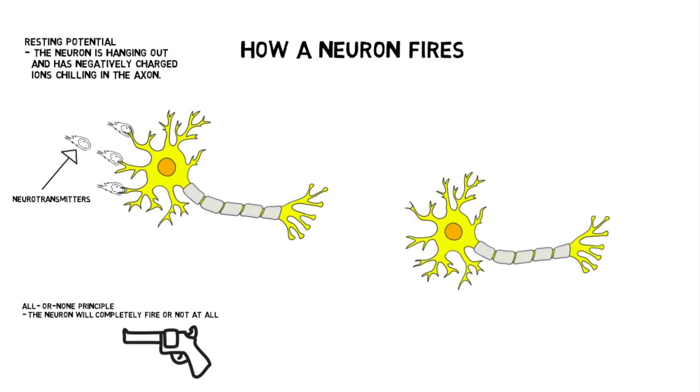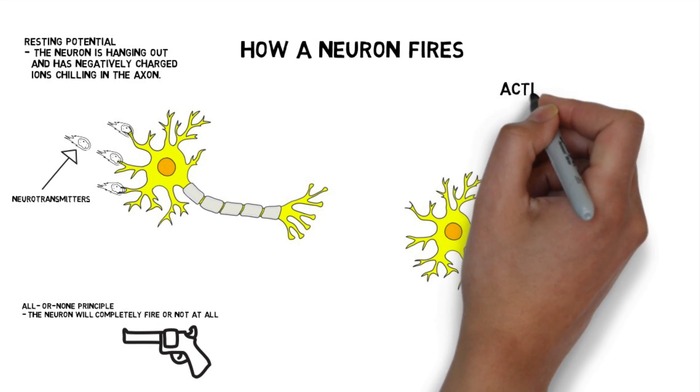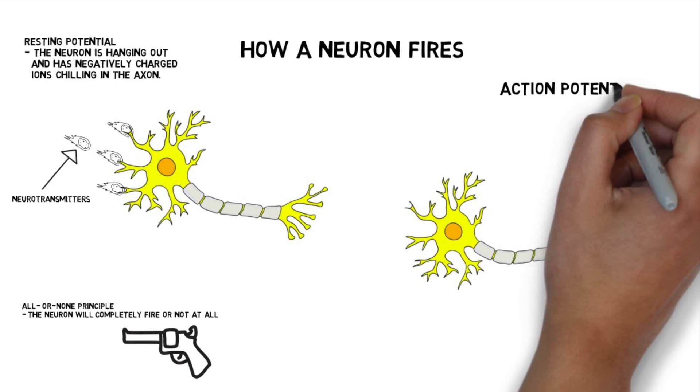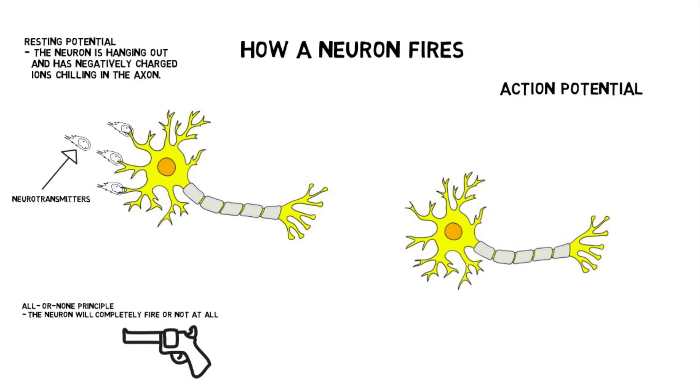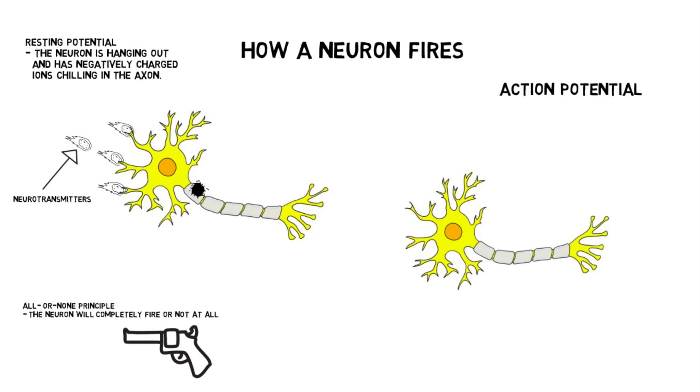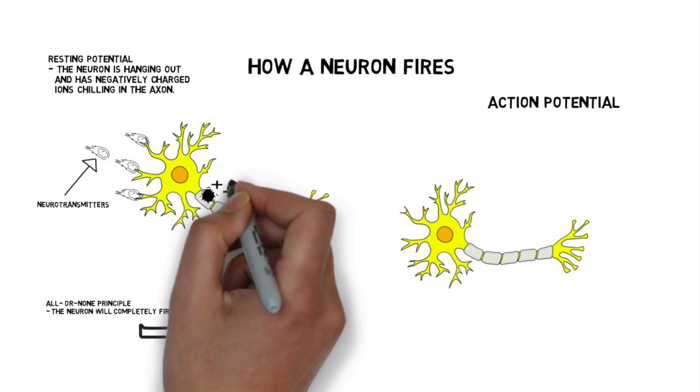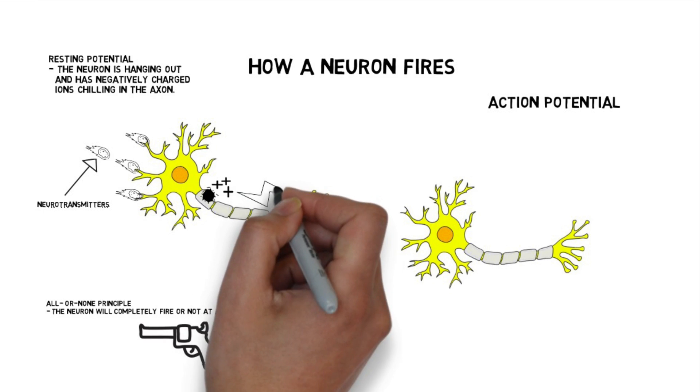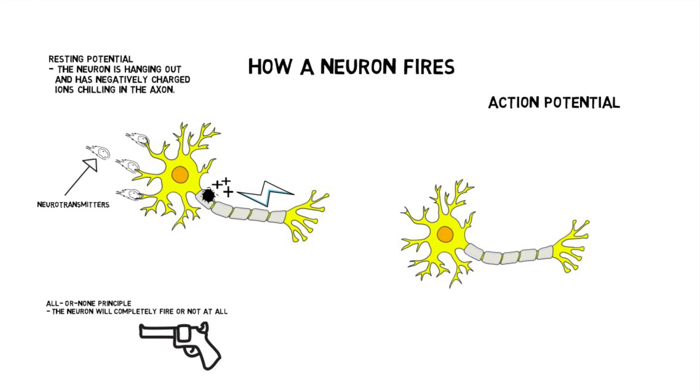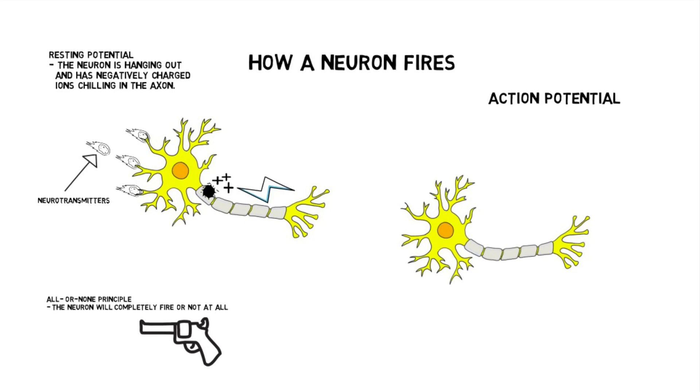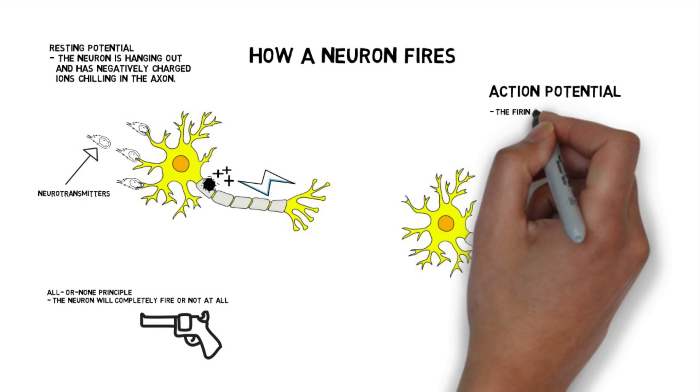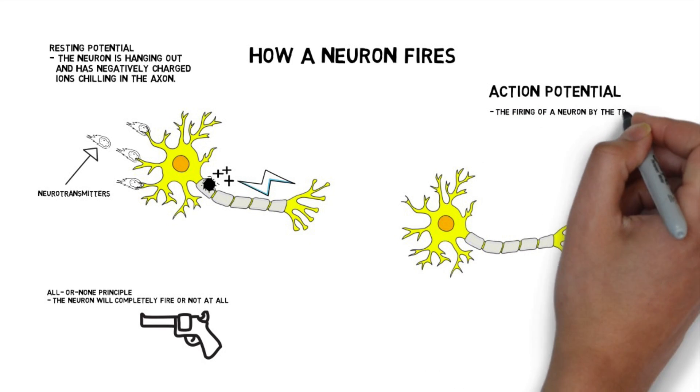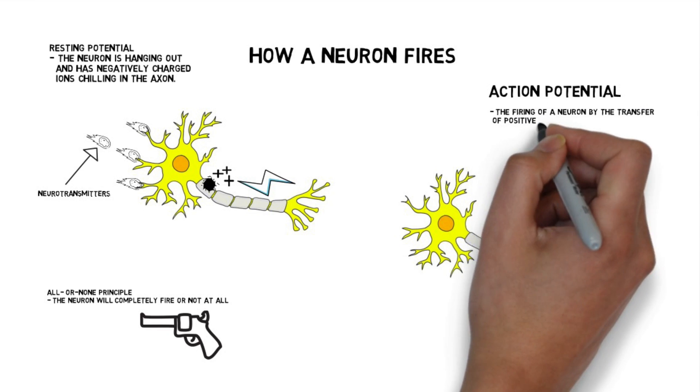So when the neuron decides to fire, it goes into a process called action potential. And what happens, basically, is a little portal opens up on the axon, and inrushes in positive ions, mixing with the negative ions inside the axon, causing an electrical charge to travel down the axon. Now, in case you want to know, these ions can be many different things, but they're usually potassium and sodium, but I don't think it's all too important to know.